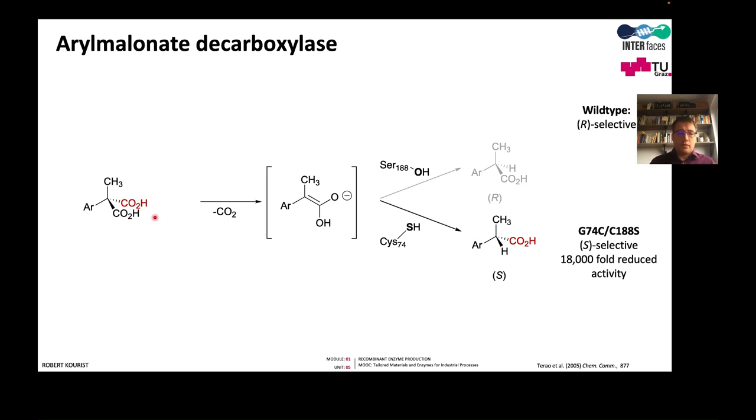The case was the aryl malinate decarboxylase, which produces optical pure alpha substituted carboxylic acids. The enzyme decarboxylates malinates, cleaves carbon dioxide. In the wild type, it produces the R enantiomer by protonation from one side. Exchange of the cysteine to a serine, which does not protonate anymore, and the introduction of cysteine at the opposite side of the active site completely inverted the enantioselectivity. This is a classical case of rational design, because a rational prediction was investigated in the experiment and could be confirmed.